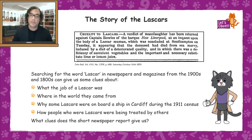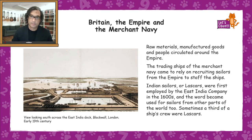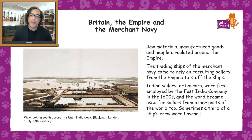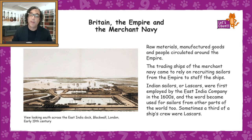The merchant navy played a critical role in the story of the British Empire, because raw materials and manufactured goods, along with people, all circulated around the empire. Trading ships that were part of the merchant navy came to rely on recruiting sailors from the empire to work on their ships. Indian sailors were known as Lascars; they were first employed by the East India Company in the 1600s. The word came to be used for sailors from other parts of the world too, and sometimes one in three of all the crew on a ship might have been Lascars.